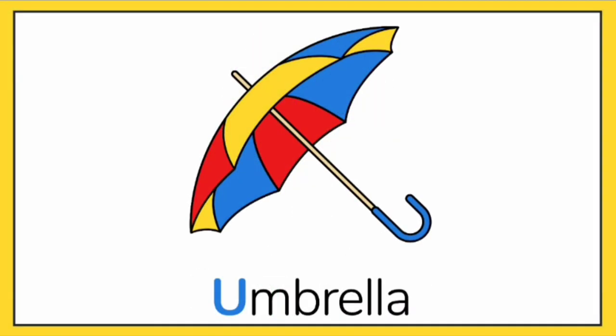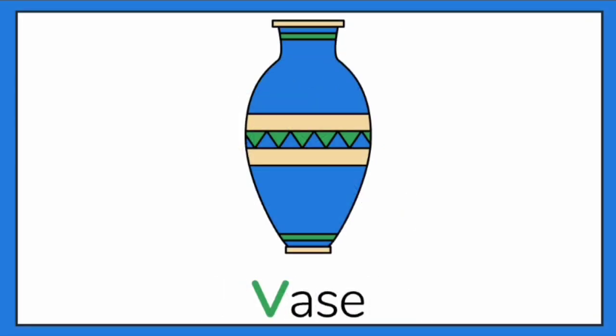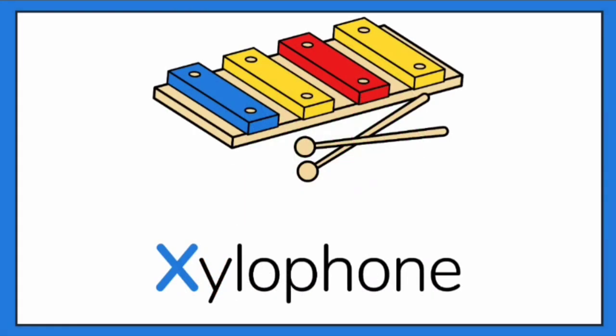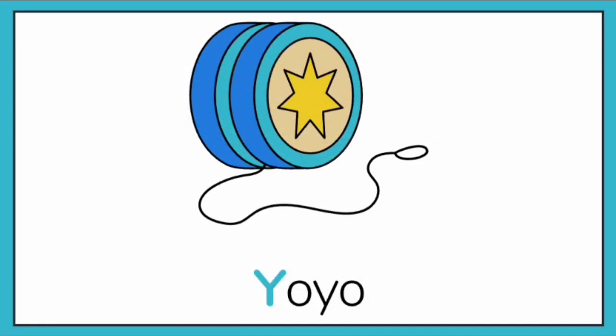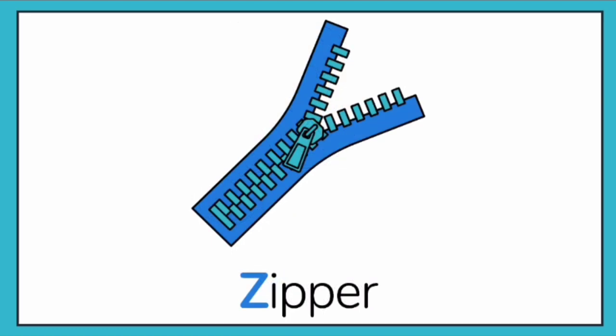B for Tree. U for Umbrella. B for Wash. W for Watermelon. X for Xylophone. Y for Yo-Yo. Z for...